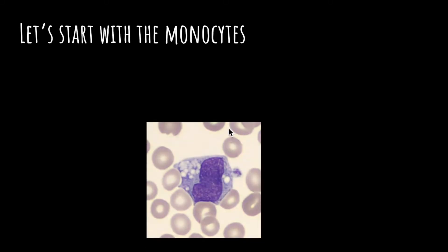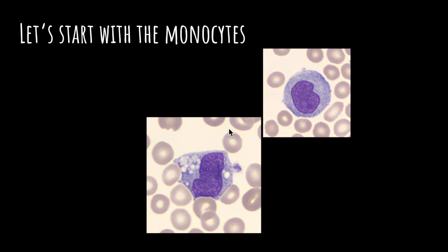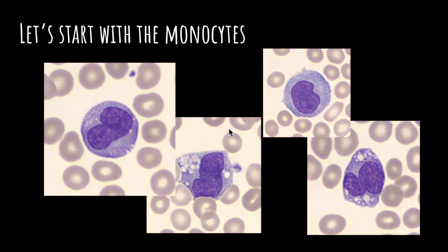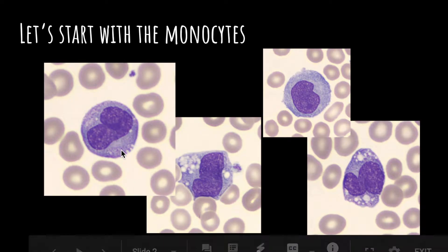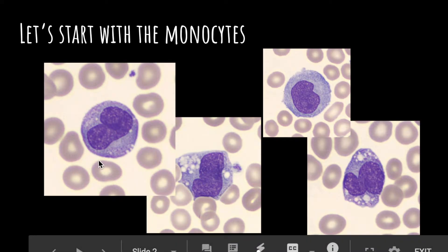Let's start with the monocytes. Immediately you can see that it's a large cell — the RBCs around it are much smaller than a regular monocyte. The cytoplasm is bluish-gray and it's pretty large compared to the nucleus. The NC ratio is really kind of equal, so there's a large nucleus inside and large cytoplasm outside.